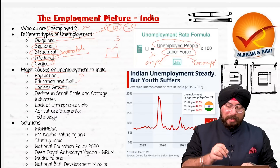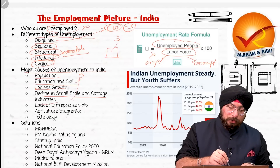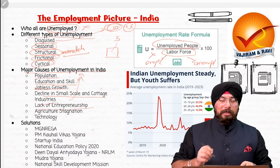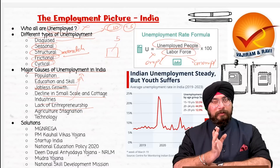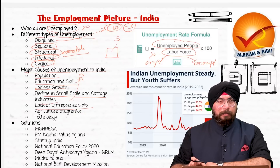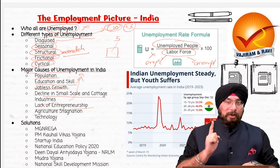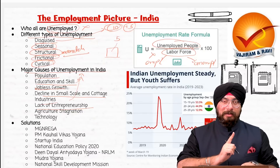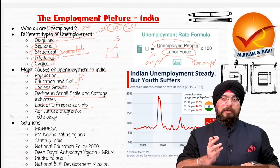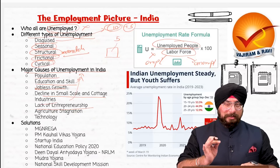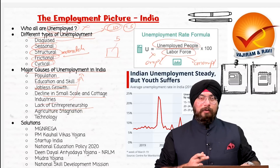Because of that, there is jobless growth. Decline in small scale and cottage industries is also a self-explanatory point showing why there is unemployment. Then lack of entrepreneurial attitude: 90% or more of students in our country right now are going for government jobs. Because of that, there is lack of entrepreneurship. Whenever there is lack of entrepreneurship, job creation in the economy will not happen. When job creation is absent, the problem of unemployment will persist, and the employment picture of the whole country will be very bad.